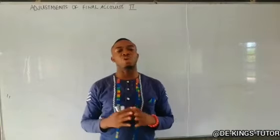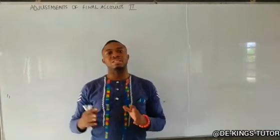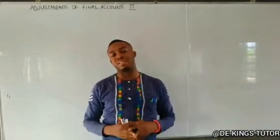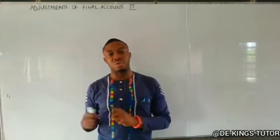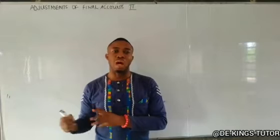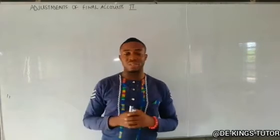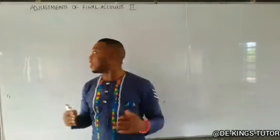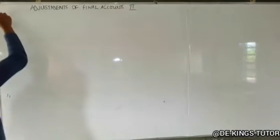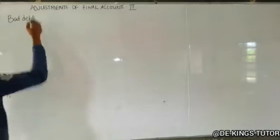In the previous video we looked at stock, accrued income and expenses. We also saw prepayment that includes income and expenses, how it is treated, how we post to the profit or loss and also to the balance sheet. Now let's take it to the next level. The other adjustment we want to see is bad debt.